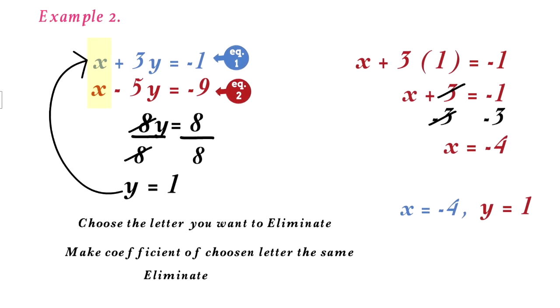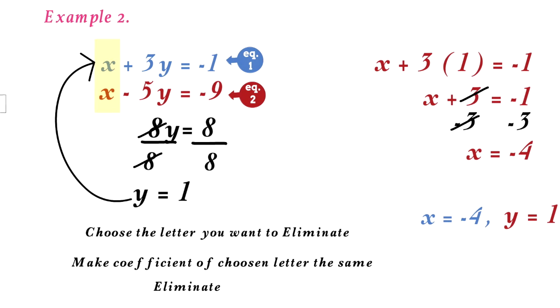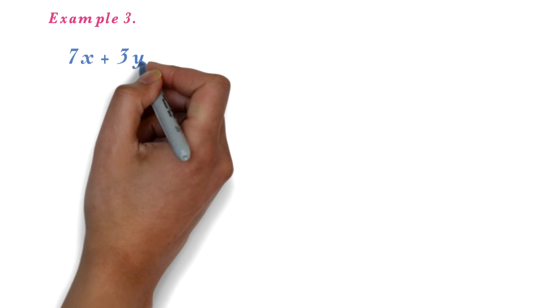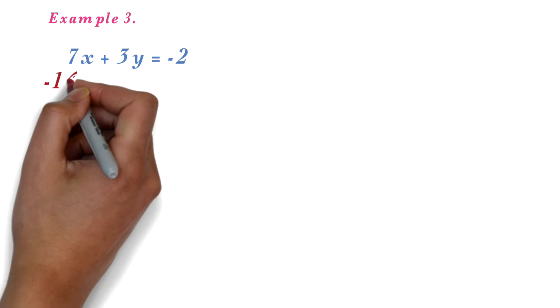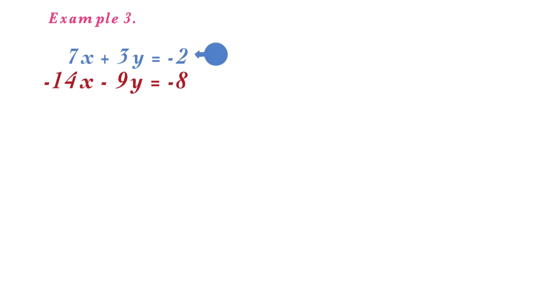We have looked at two examples in which one of the variables has the same coefficient in both equations. Let's look at examples where we have to manipulate the coefficients before solving. Example 3: solve the simultaneous equations 7x plus 3y equals negative 2, and negative 14x minus 9y equals negative 8. Let's call this equation 1 and equation 2.